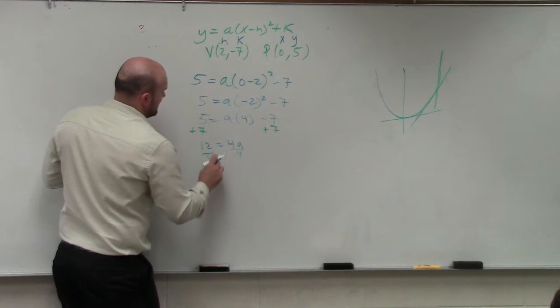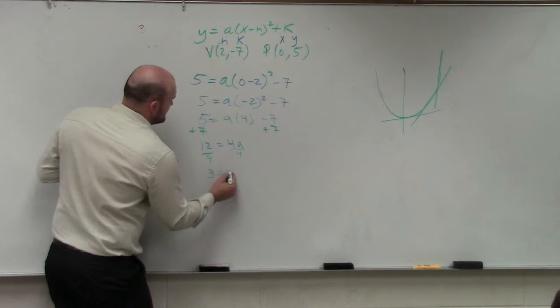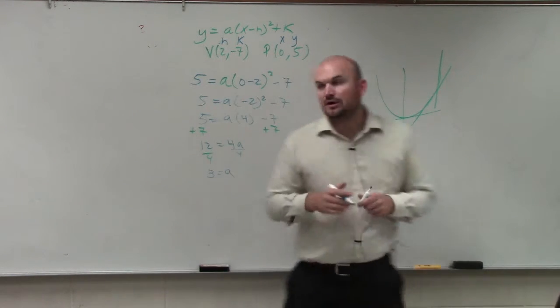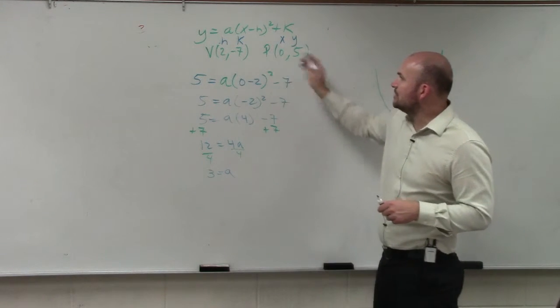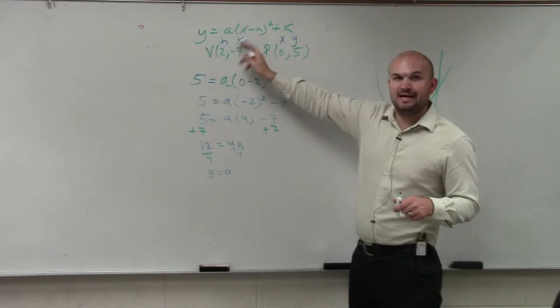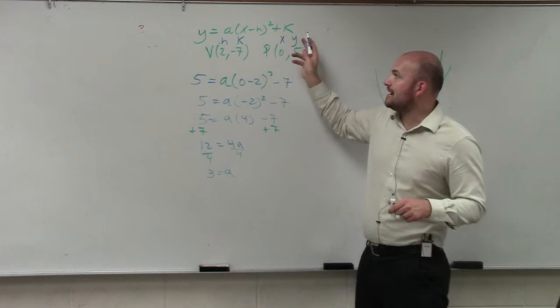Divide by 4, divide by 4, 3 equals a. So now, all I simply do is I plug back 3 in for a, introduce my h and my k.